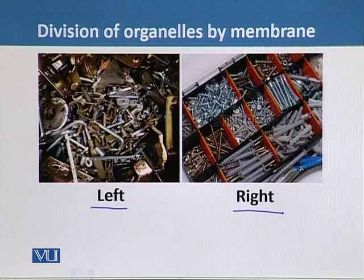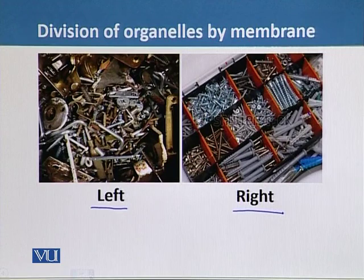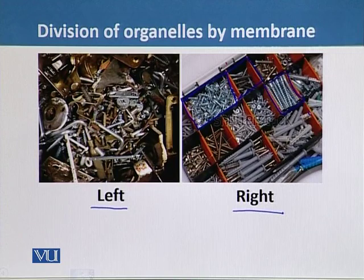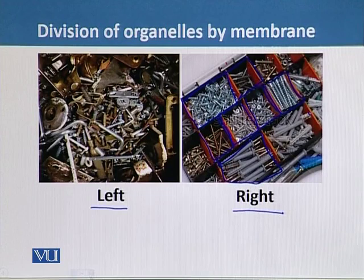To get a better insight into the concept of the cell, consider the left side and right side boxes. The question is: which box provides the best access to very specific screws and nails? The right box is correct, because it has very specialized compartments for nails and screws, allowing us to pick the right one to perform a specific function. Similarly, cells are divided into specialized organs called organelles.